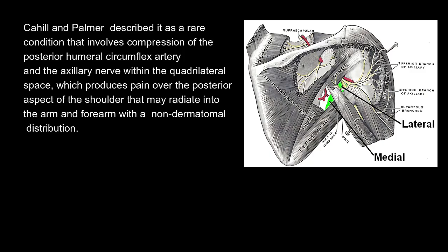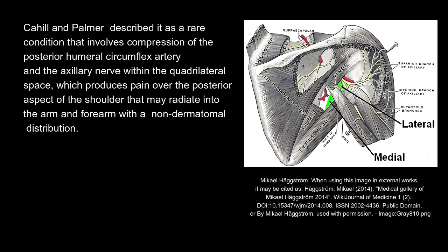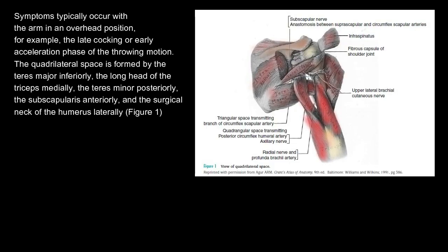Cahill and Palmer described it as a rare condition that involves compression of the posterior humeral circumflex artery and the axillary nerve within the quadrilateral space, which produces pain over the posterior aspect of the shoulder that may radiate into the arm and forearm with a non-dermatomal distribution. Symptoms typically occur with the arm in an overhead position.